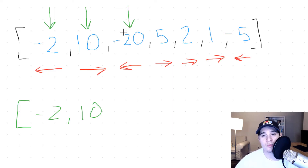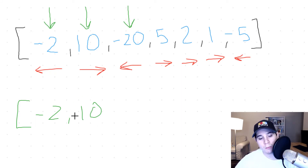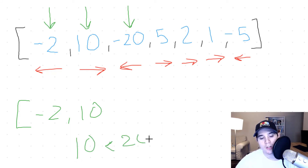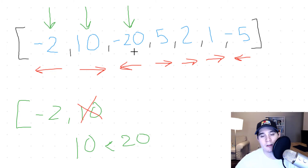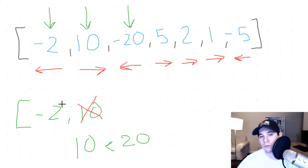Now we have a negative number, so we need to check the top of the stack and compare 10 with 20. Obviously 20 is greater, so negative 20 is going to beat 10. We pop 10 from our stack. This asteroid is still moving left, so now we compare negative 20 with negative 2 — but since both are moving in the same direction, we don't need to do anything else. We just add negative 20 inside our stack.